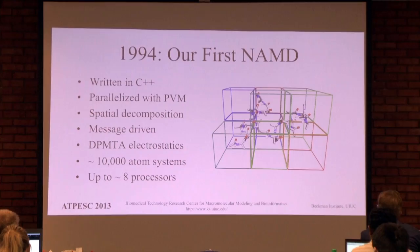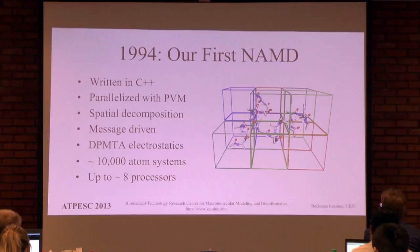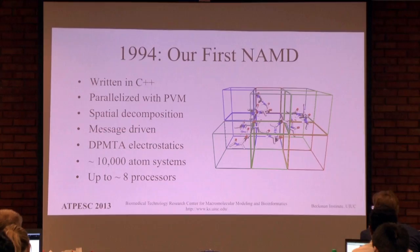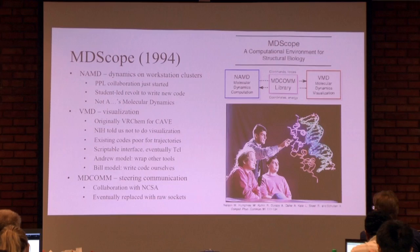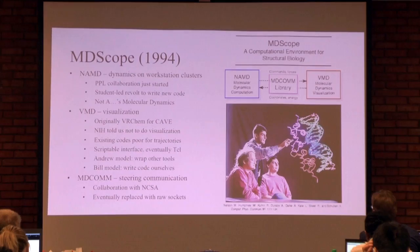Our first NAMD in 1994 was written in C++, which was considered crazy at the time — you would write in Fortran or maybe C. We used PVM, a spatial decomposition which was new at the time, and the new technology of message-driven execution where data arrives and you take action based on what messages have arrived. We used a long-range electrostatics method based on fast multipoles called DPMTA, running at about 10,000 atoms and about 8,000 processors. This was not a standalone program; it was part of an environment called MD Scope back in 1994.